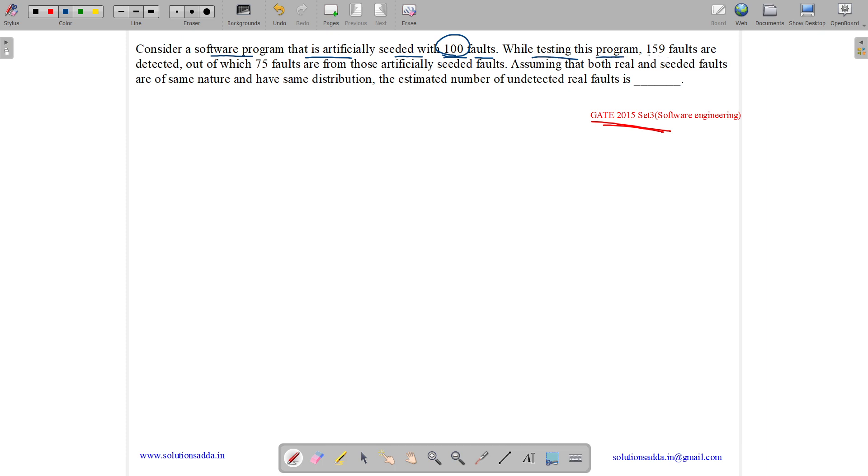While testing this program, 159 faults are detected, out of which 75 faults are from those artificially seeded faults. Assume that both real and seeded faults are of same nature and have same distribution. The estimated number of undetected real faults are?